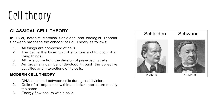Since the formation of classical cell theory in 1838, technology has certainly improved, allowing for more detailed observations that have led to new discoveries about cells, and such findings have led to the formation of what we now call modern cell theory, which has three additions to the original. First, DNA is passed between cells during cell division. Second, the cells of all organisms within a similar species are mostly the same structurally as well as chemically. And third, energy flow occurs within cells, addressing cell metabolism and the process of making and using ATP as an energy source.